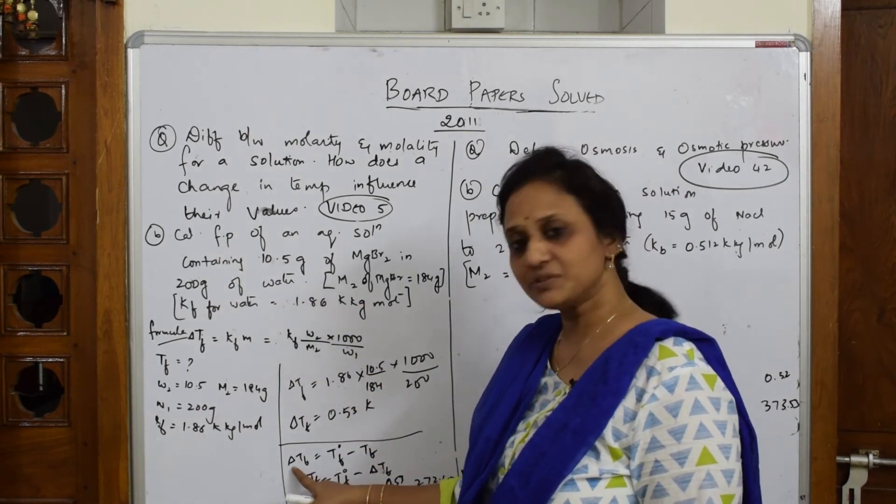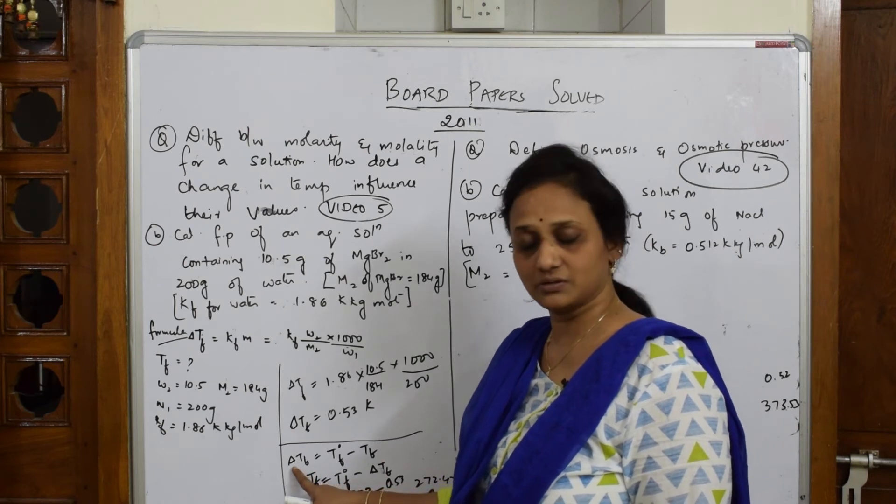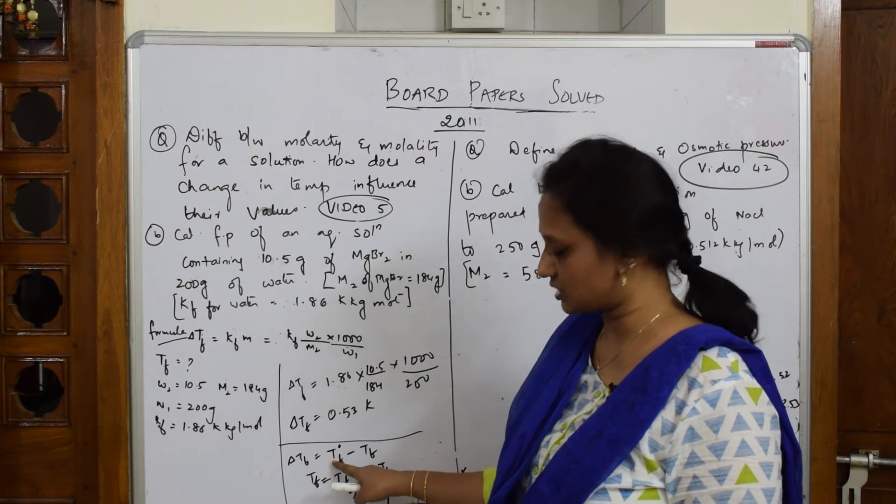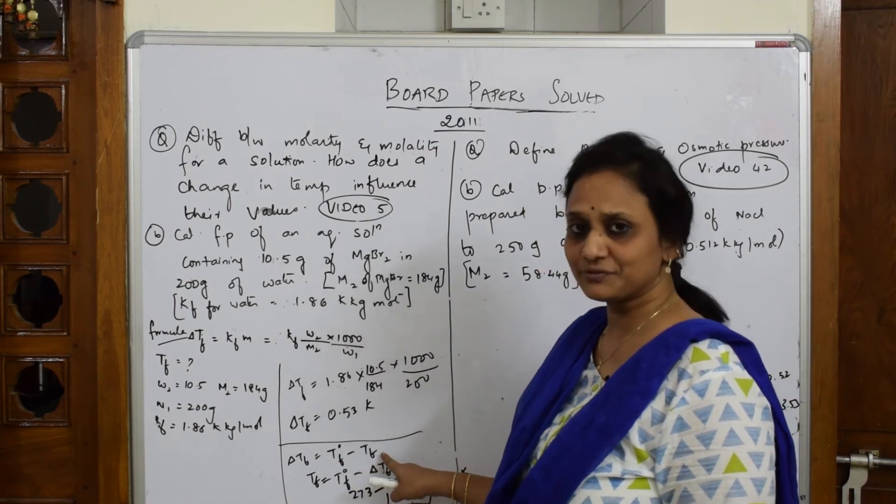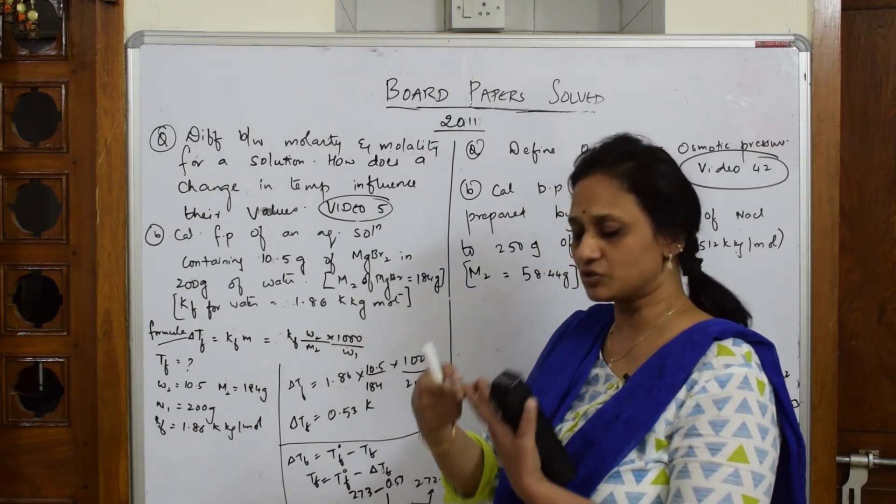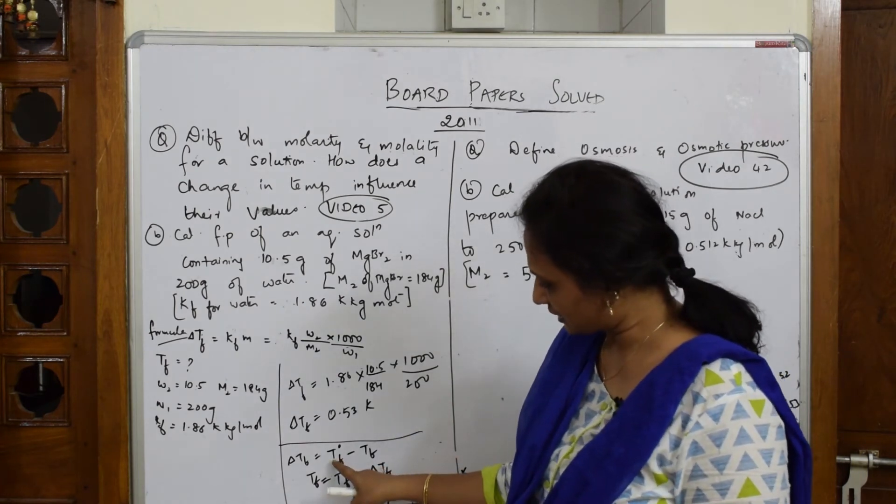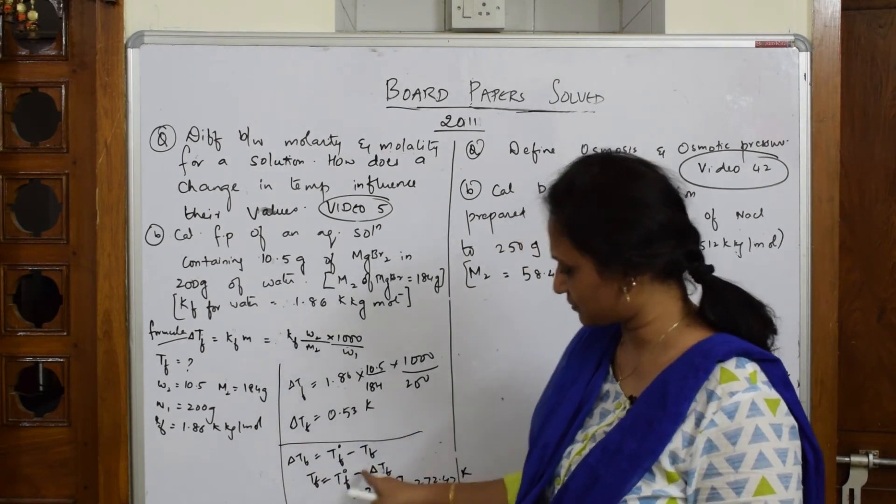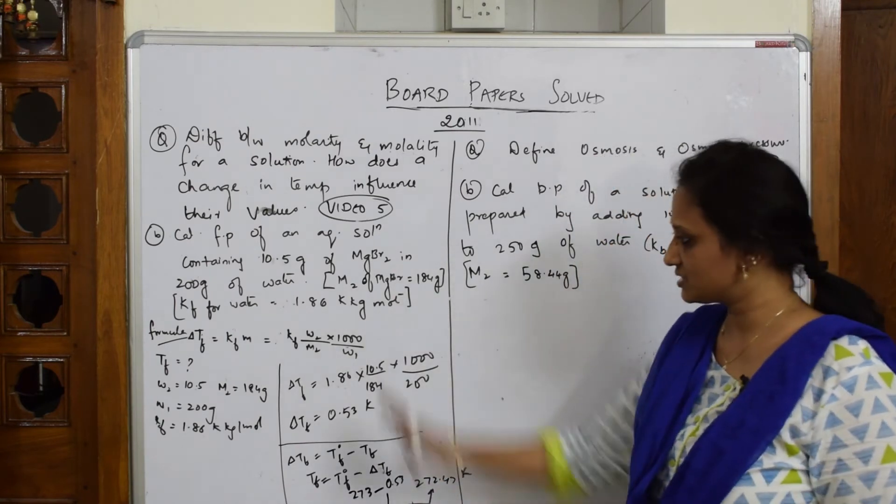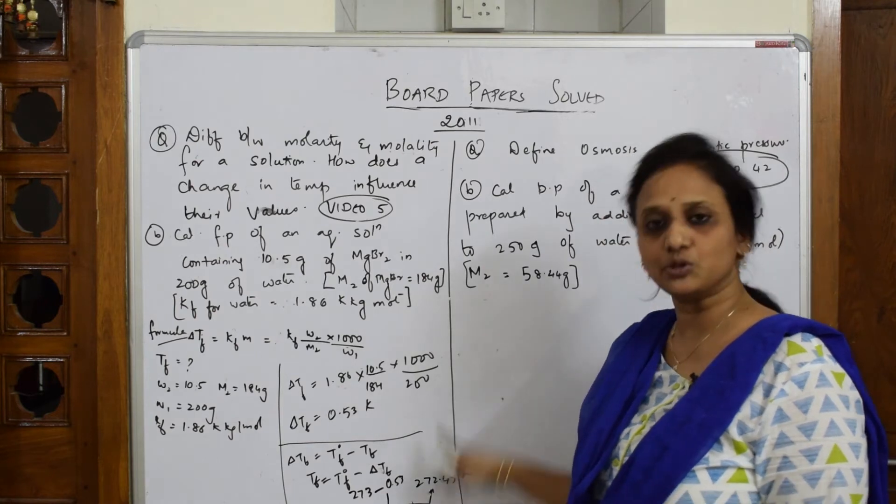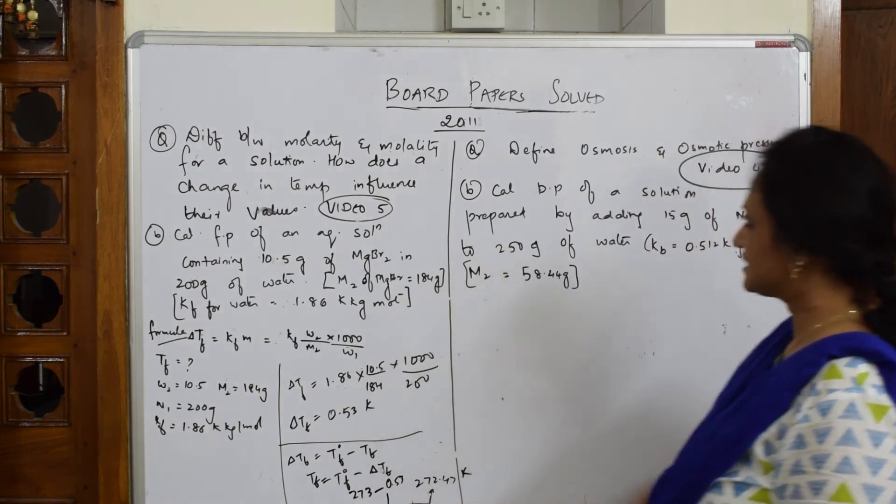I have to find TF because they asked for freezing point. Delta TF is cryoscopic depression in freezing point, which equals freezing point of pure water minus that of the solution. From 273 to 272 it has gone down. This is depression in freezing point.